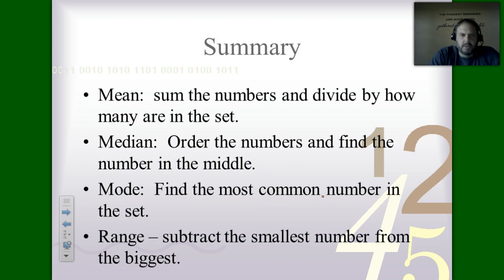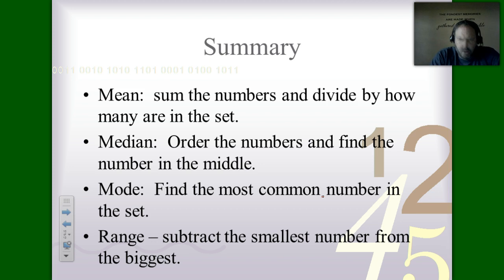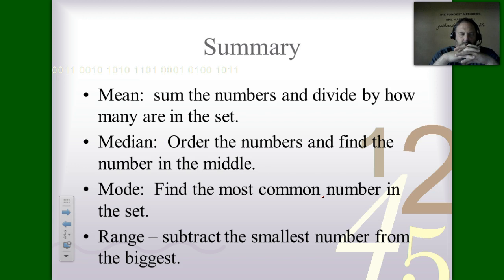Just to summarize: the mean is also called the average — add up all the numbers, then divide by how many are in the set. The median is the number in the middle — order the numbers first, then find the middle. If your data set has an even number of values, you'll end up with two in the middle; find the sum of those two and divide by two.